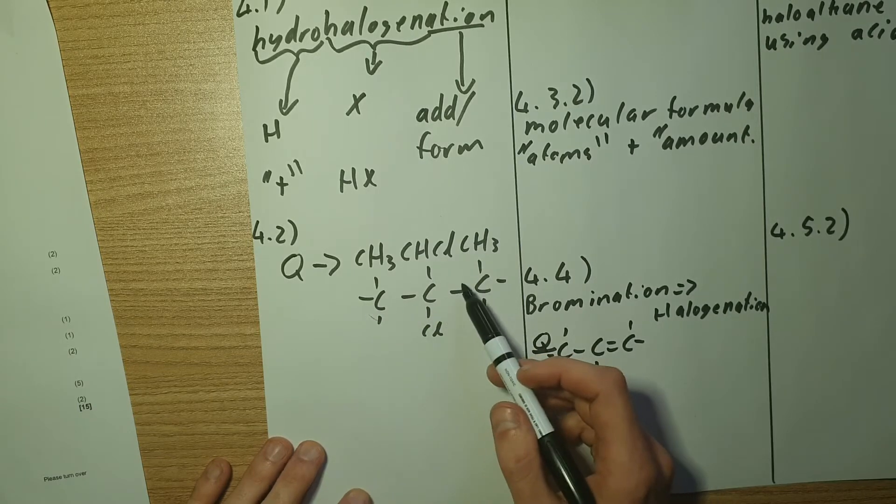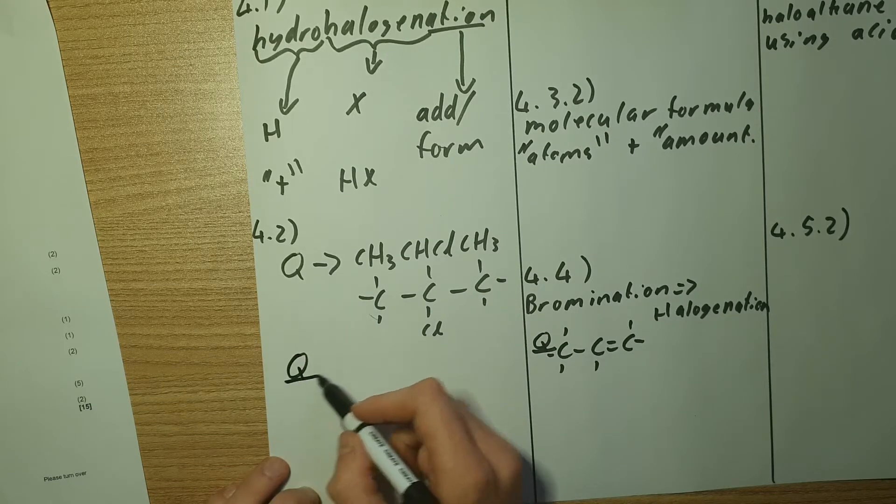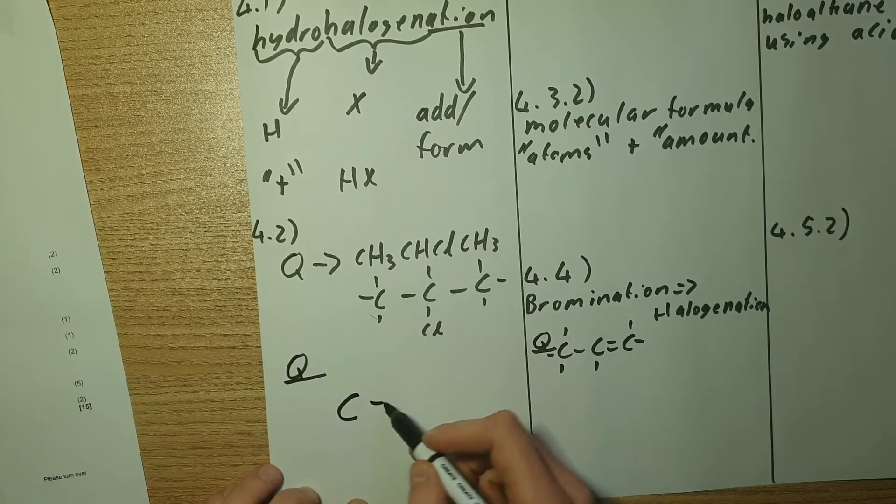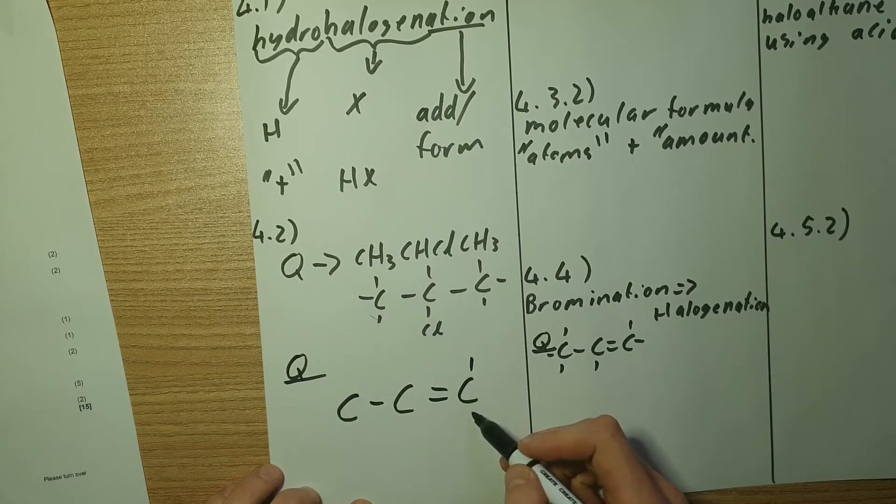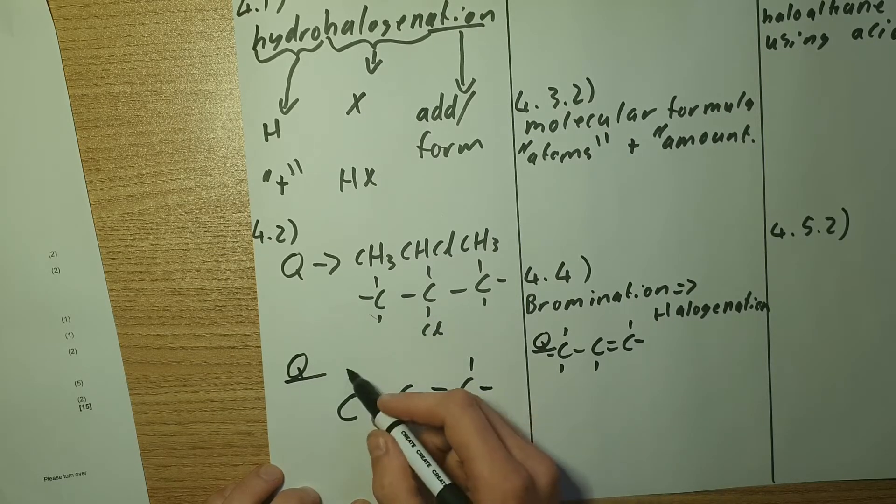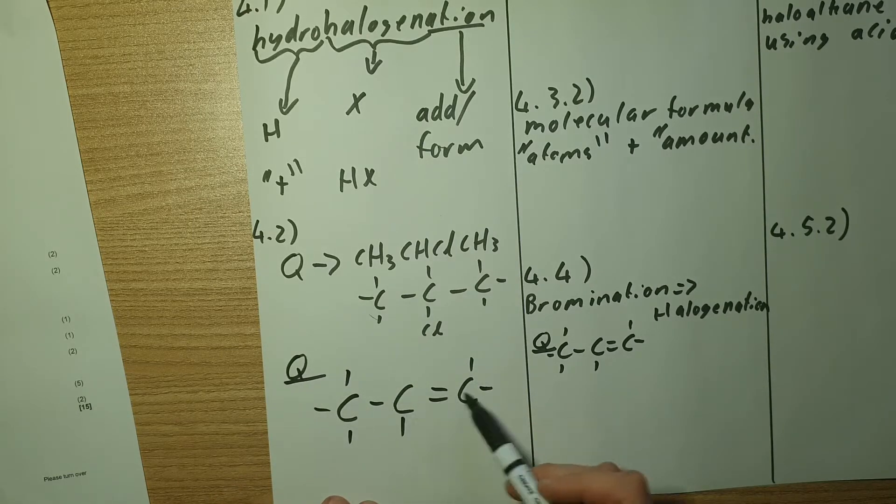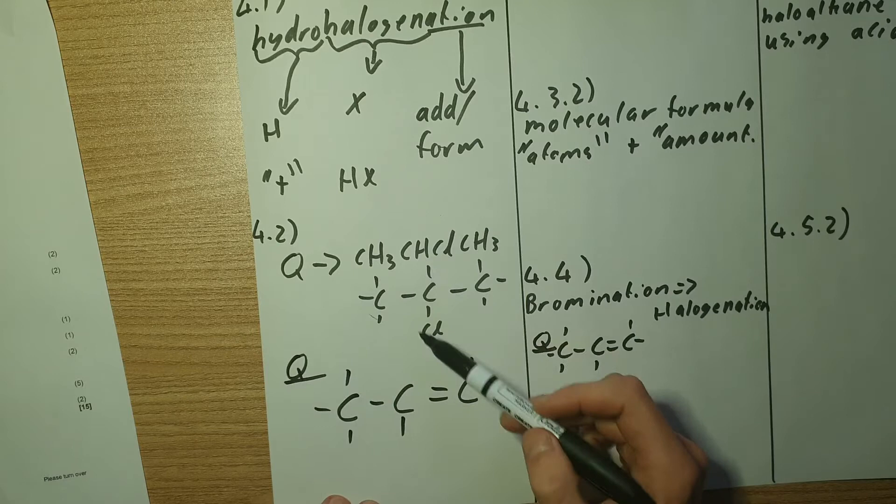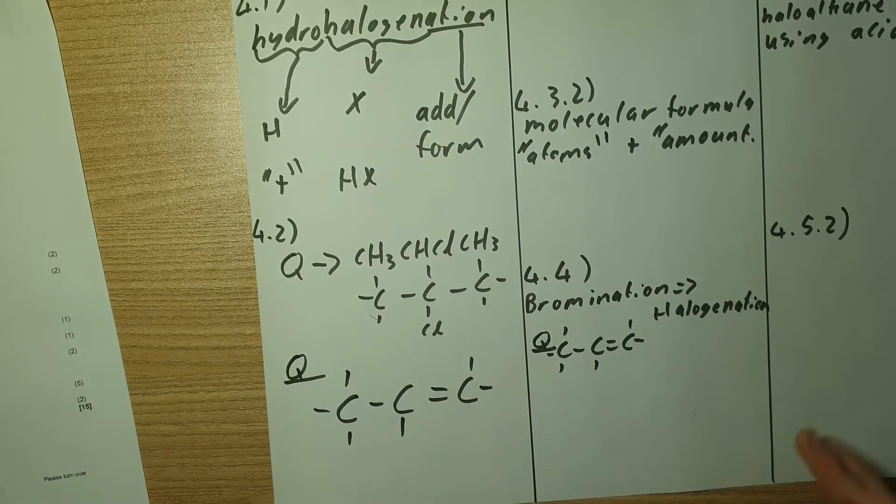So my Q is going to look something like this. I've added the double bond between the carbon because I've removed the hydrogen and the chlorine. And that's my structural formula for Q.